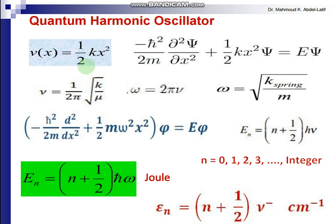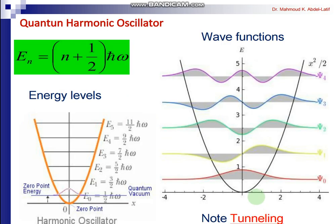For the quantum harmonic oscillator, we solve the Schrödinger equation. The potential energy is as defined before, and there is a relation between the linear frequency ν and angular frequency ω: ω = 2πν, and also ω = √(k/μ). The Schrödinger equation in one dimension is solved to give energy levels Eₙ = (n + ½)hν in joules, where n is the vibrational quantum number with values 0, 1, 2, 3. You can convert from joules to cm⁻¹ by dividing by hc, giving the wave number ν̃.